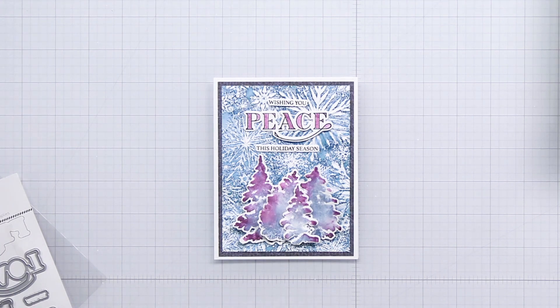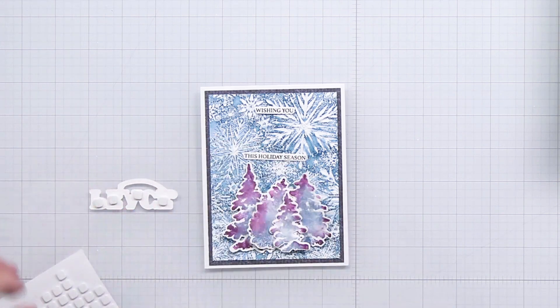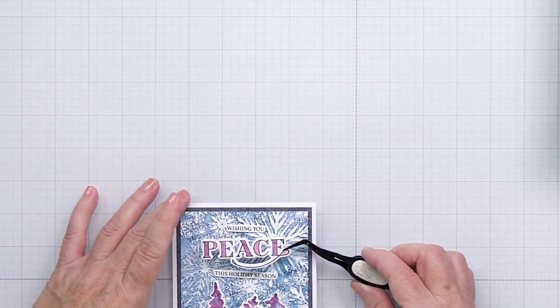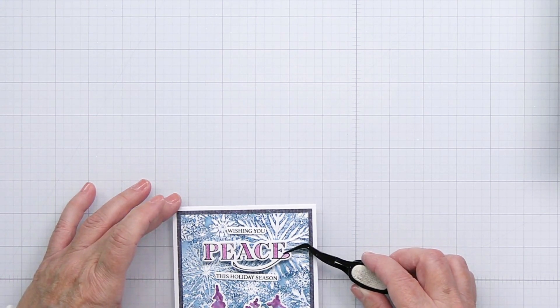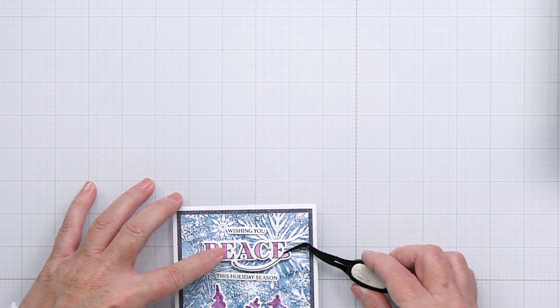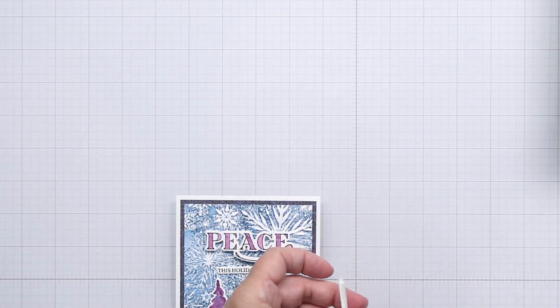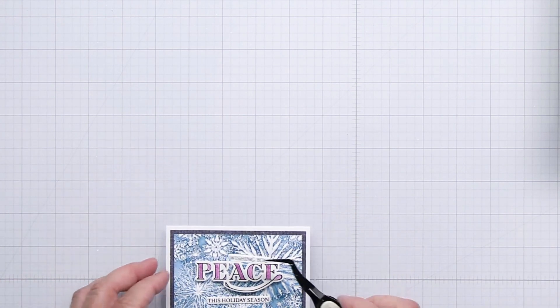The word peace is going to be bumped up with some foam adhesive, as are the other two sentiment strips as well. I'm just getting that foam adhesive on there. I'm bringing this towards myself so that I can get my head over top of this and try to get this as straight as possible. I probably should have gotten my t-square ruler out, but I didn't have it handy, so I'm just eyeballing these as best I can.